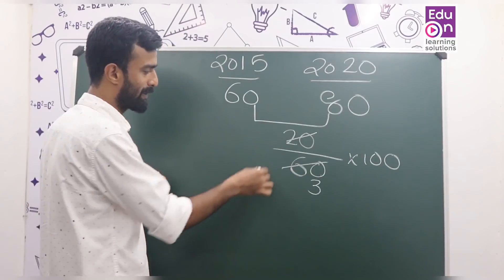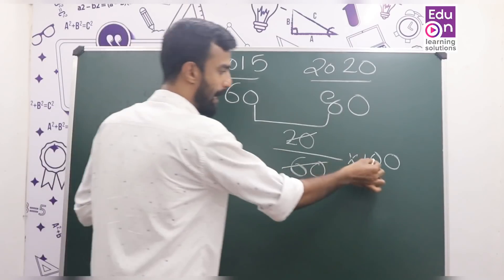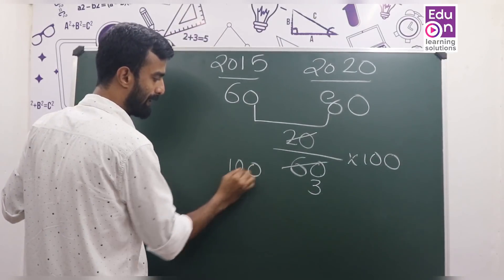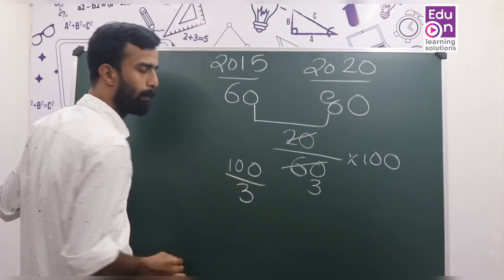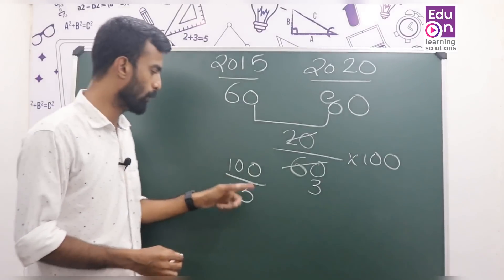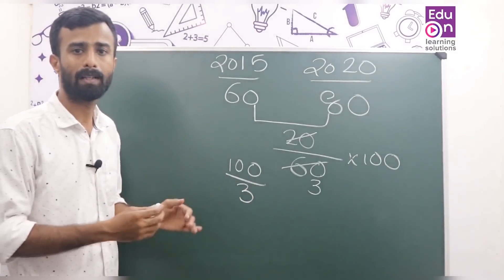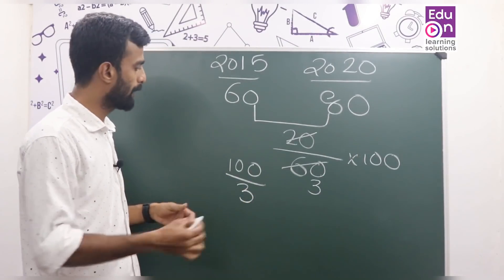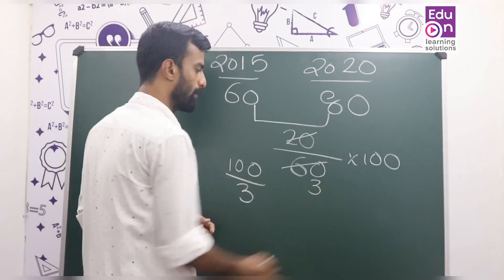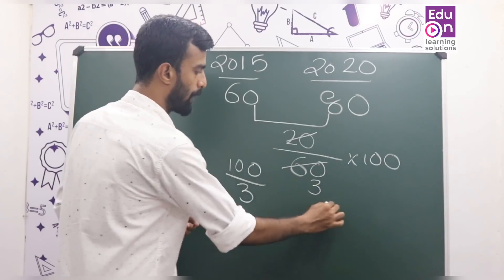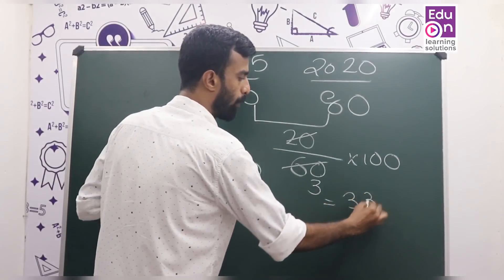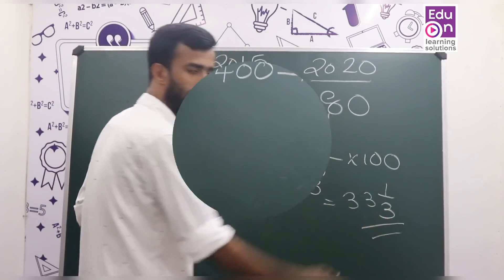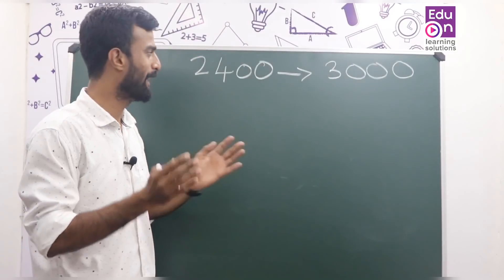We have the answer: 100 by 3. That gives us 100/3. And this is the last question.